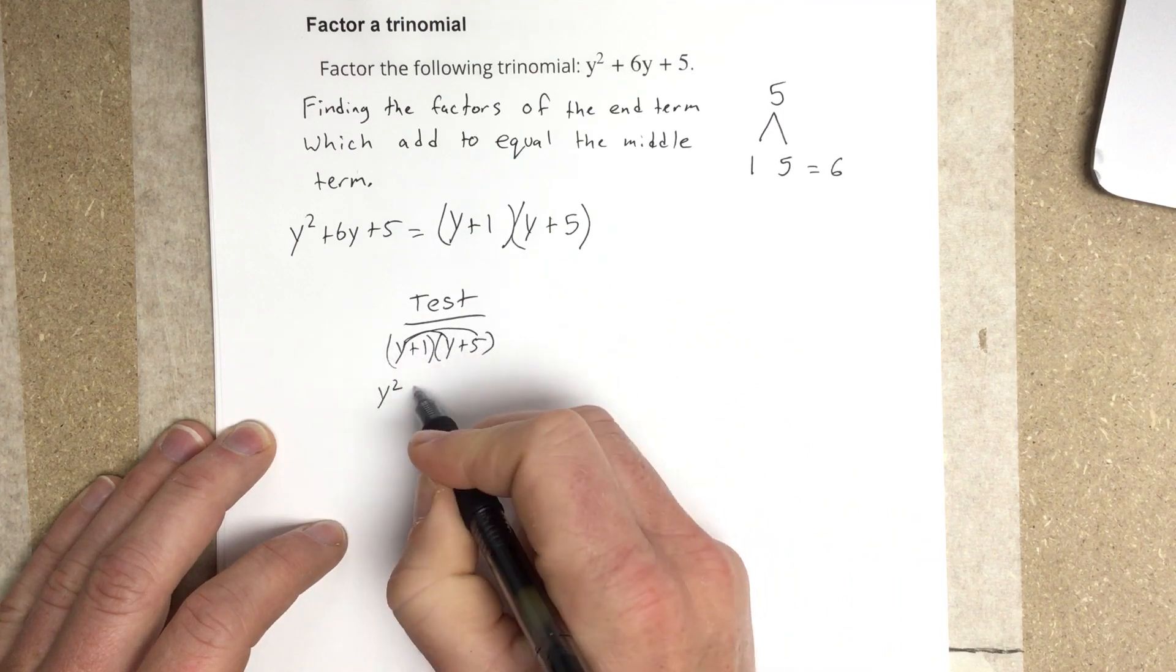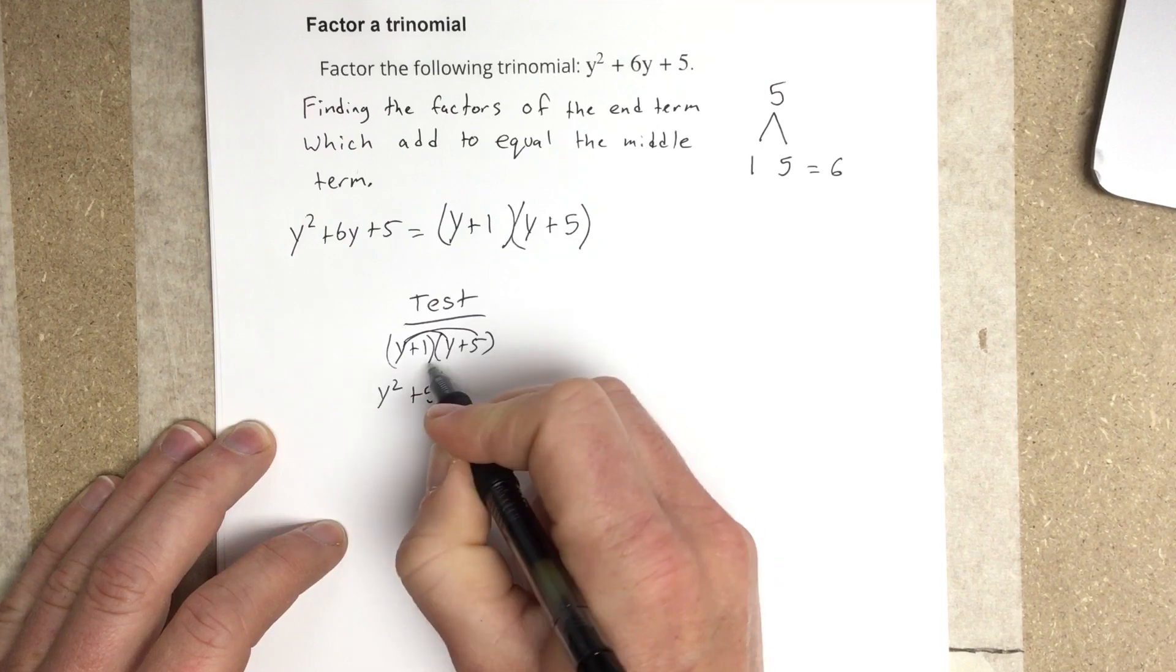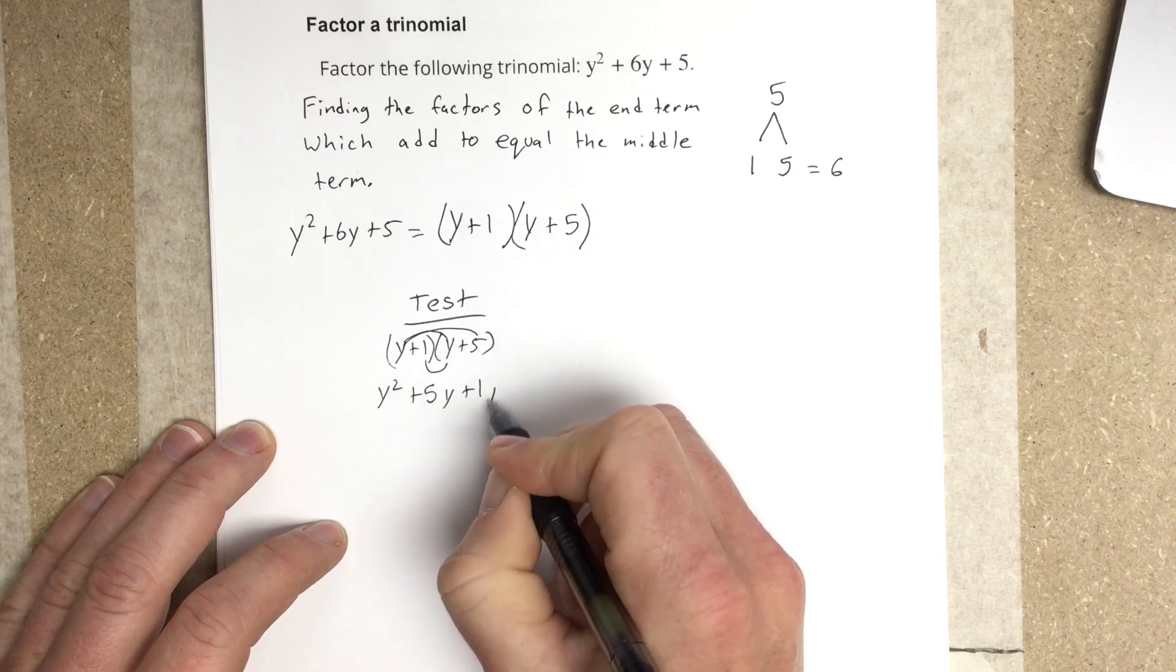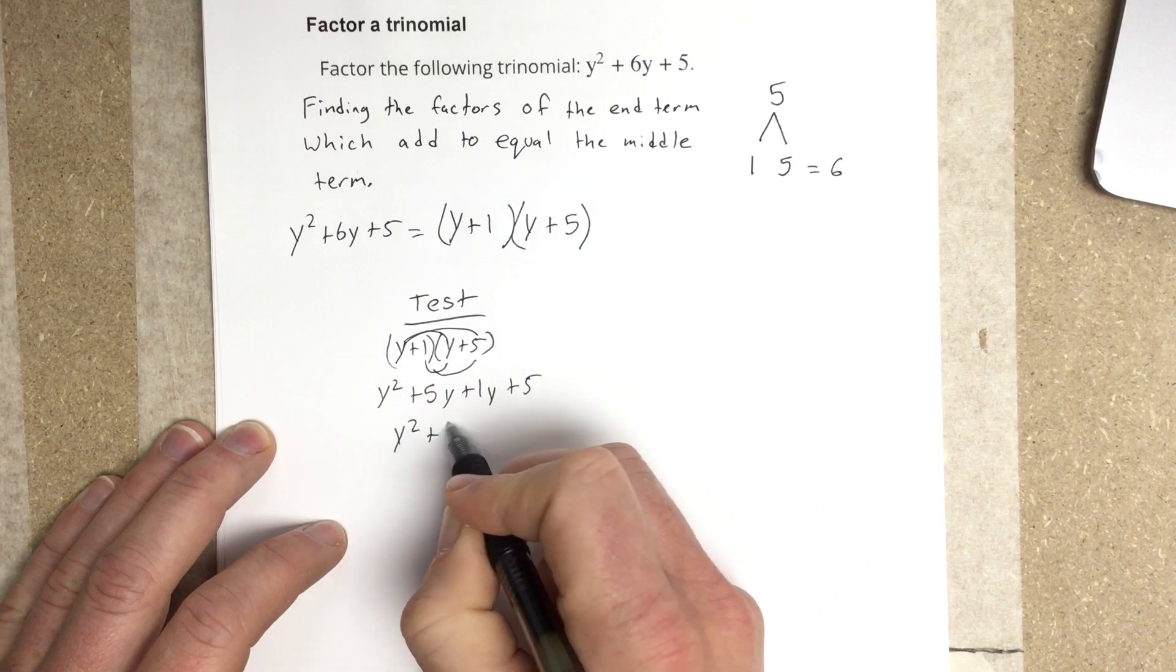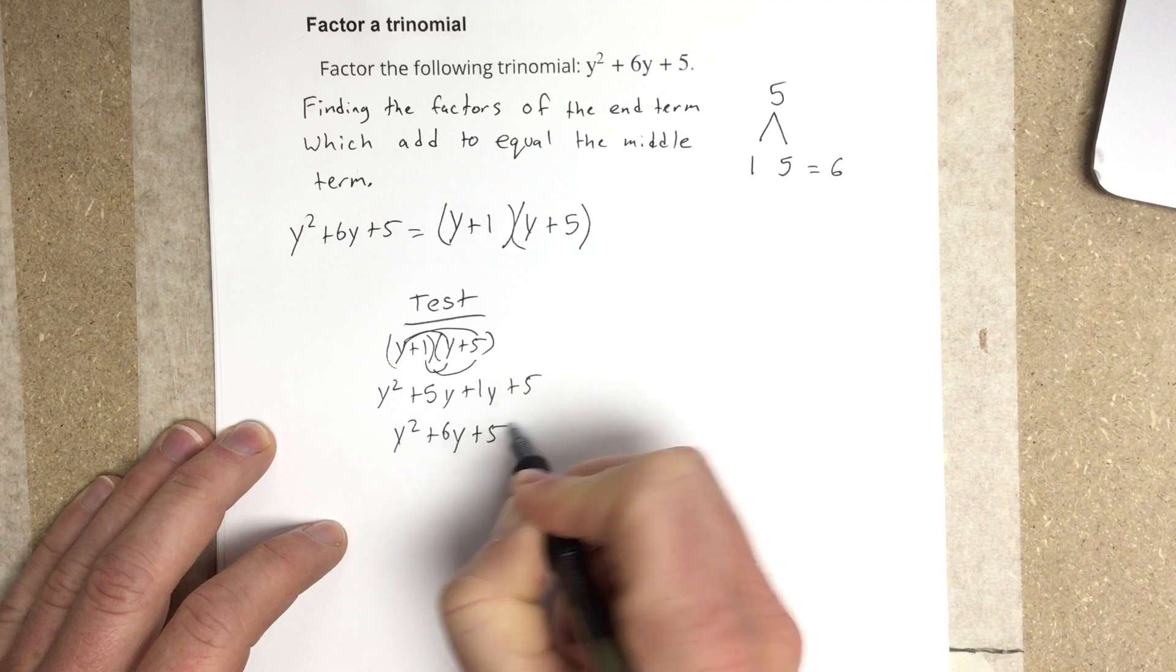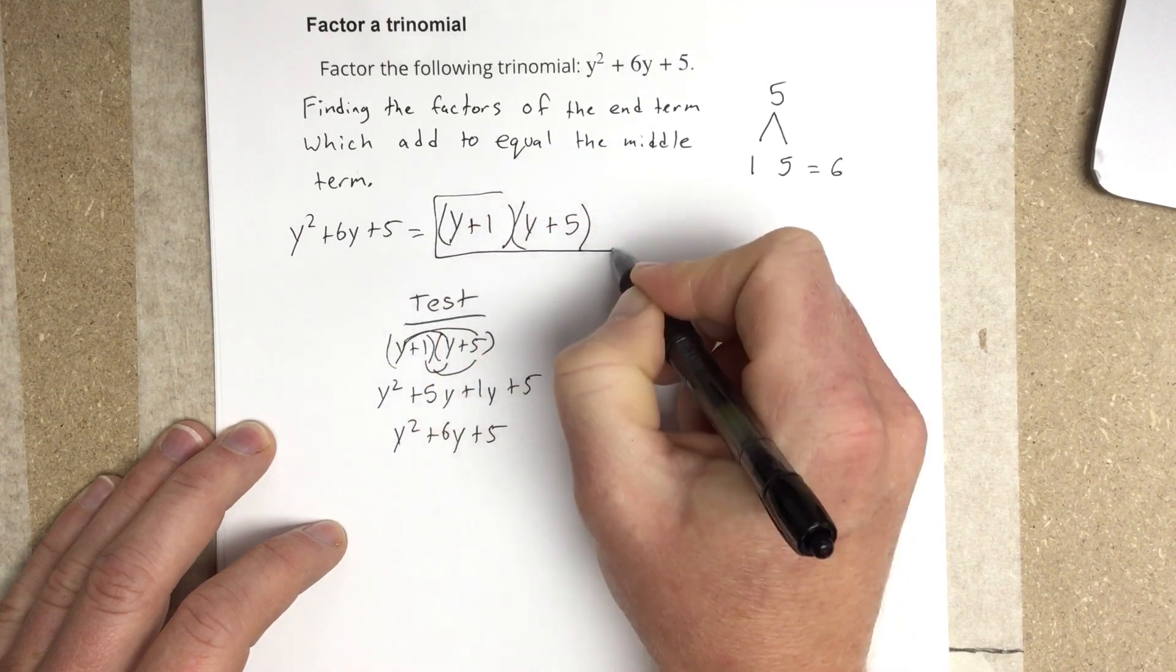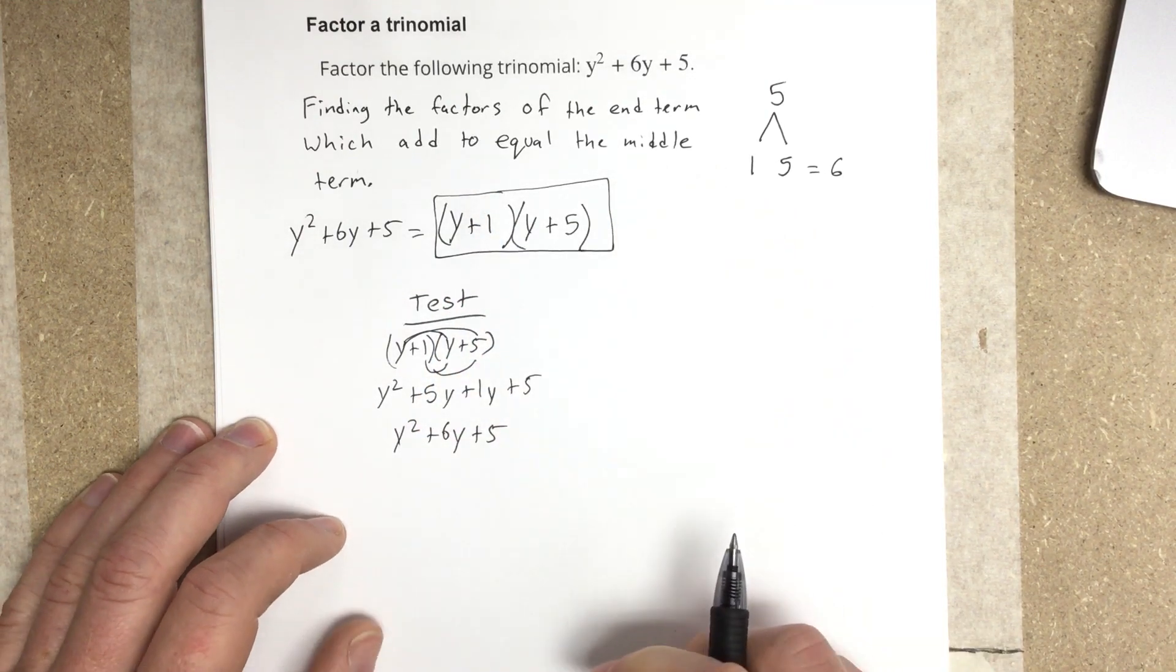1 times y is 1y. And then 1 times 5 is 5. So you'll see we end up with y squared plus 6y plus 5. So this is the factored form for our original trinomial.